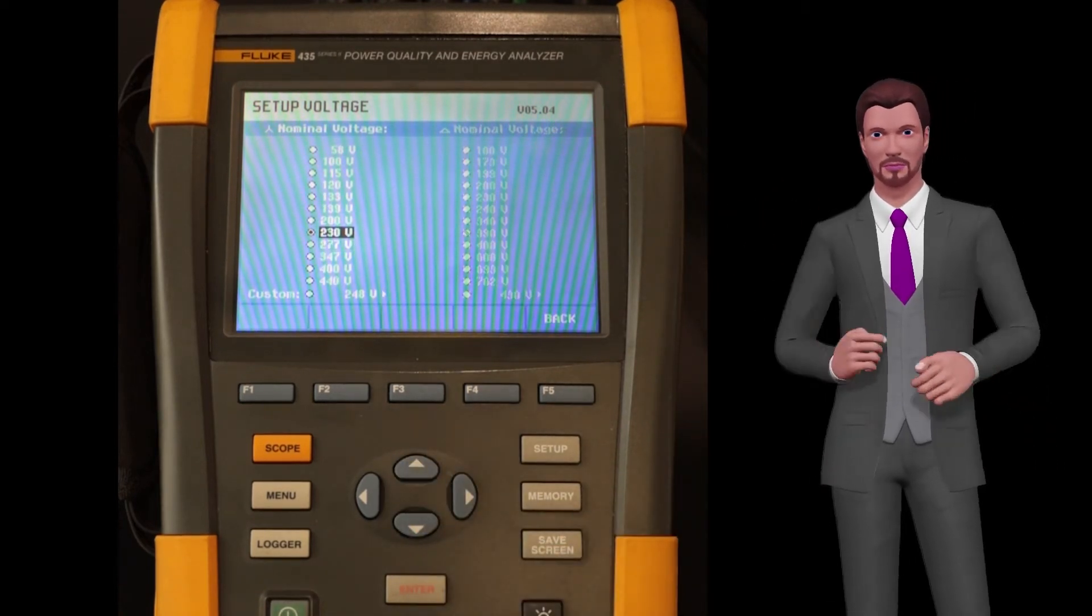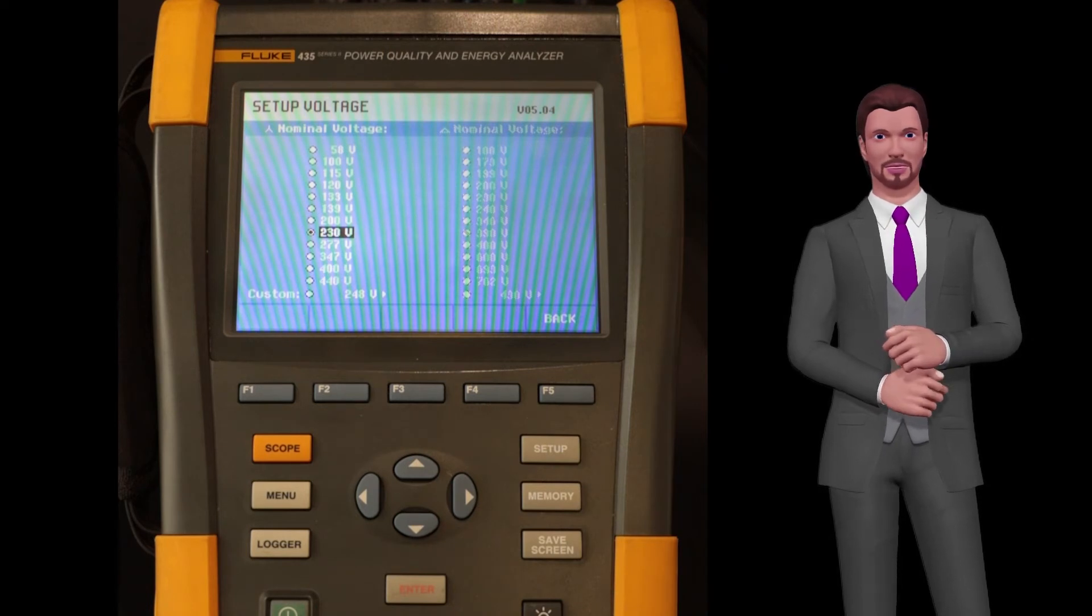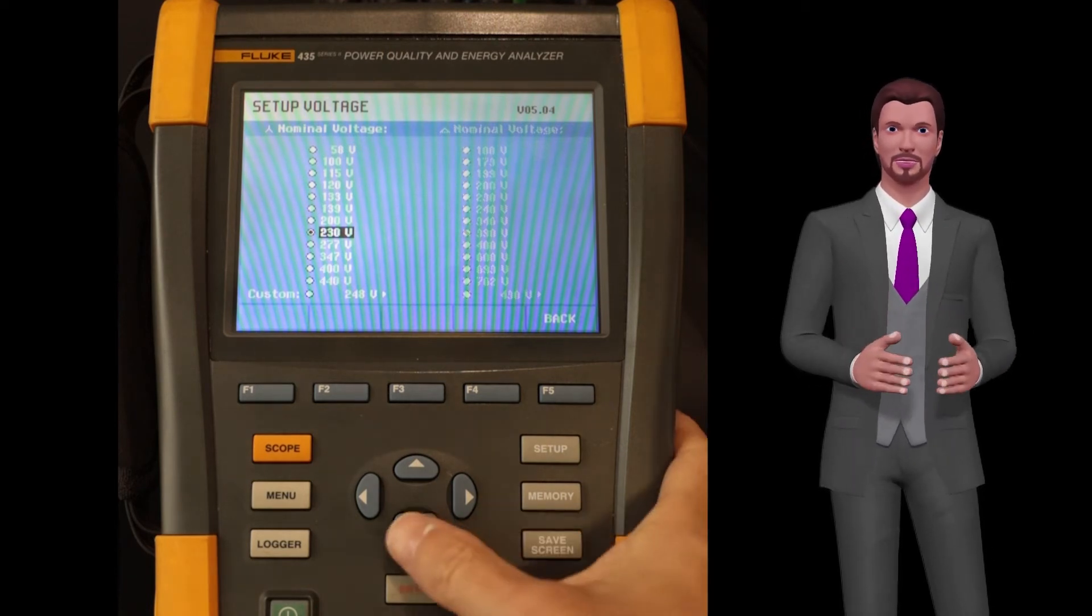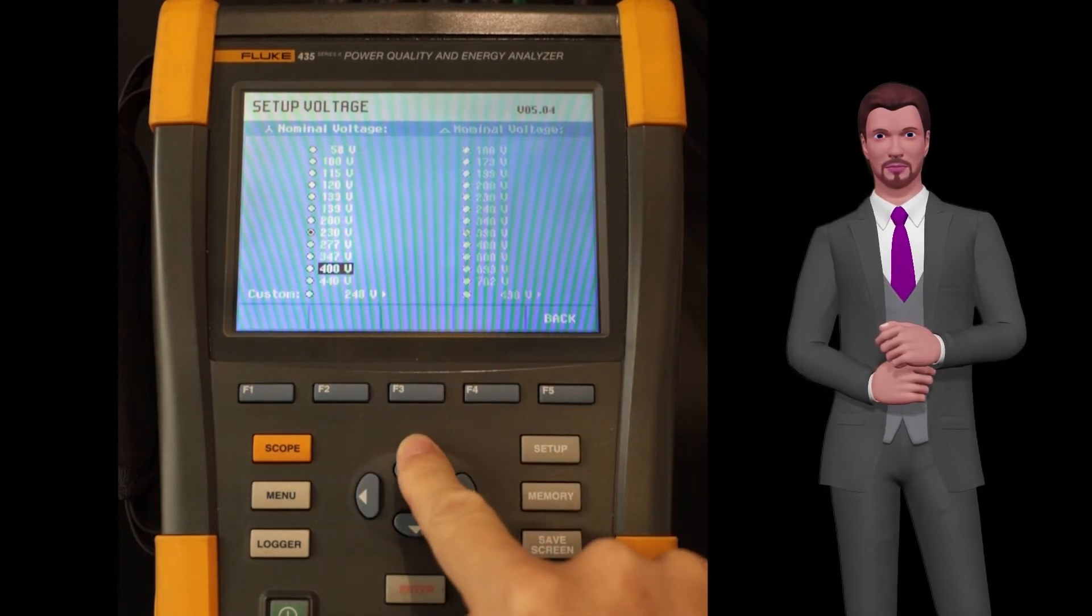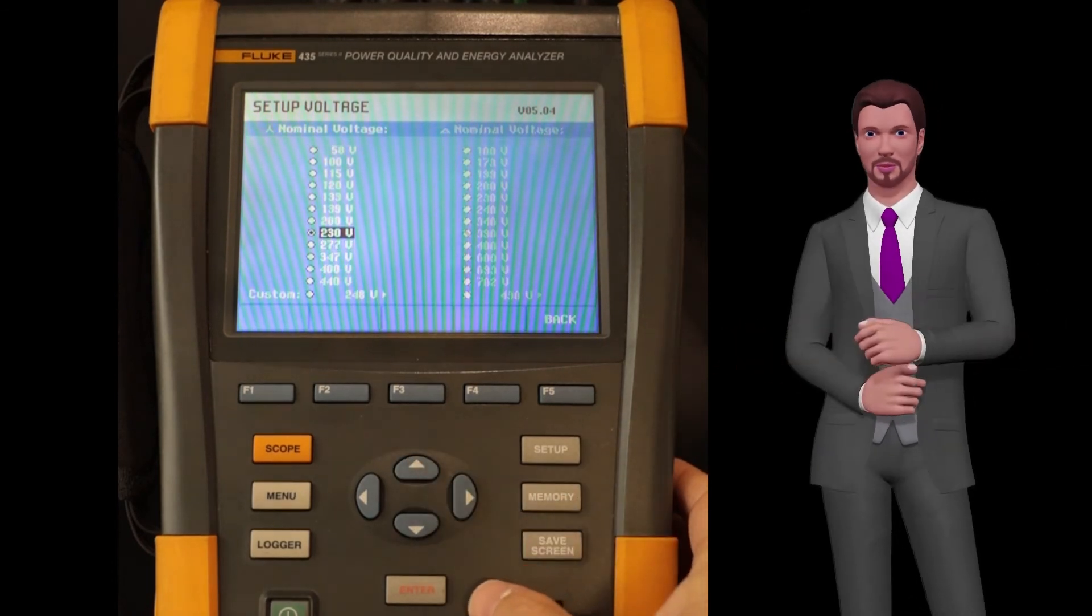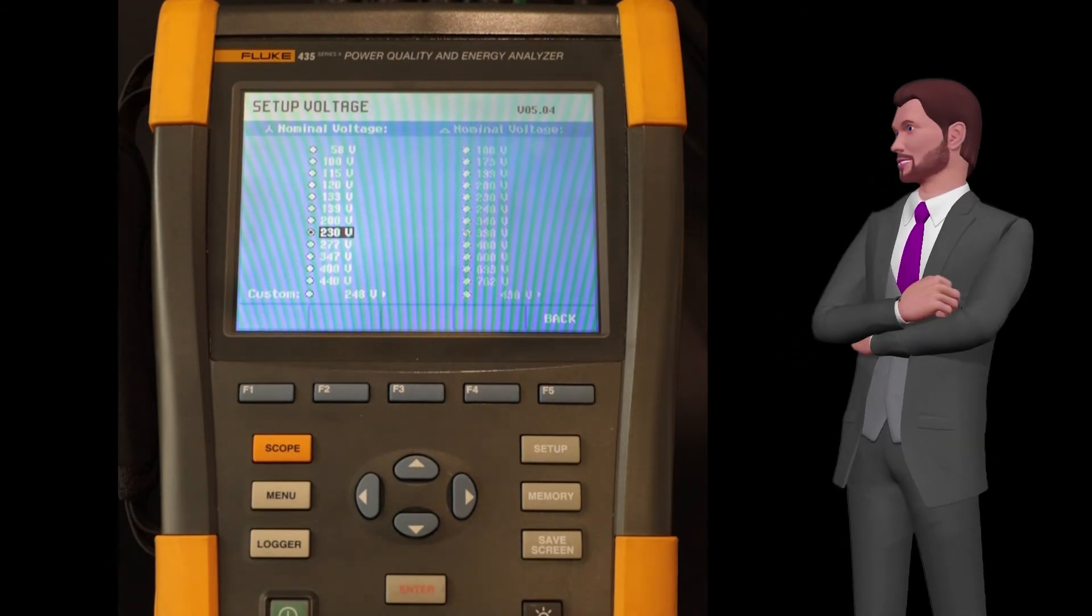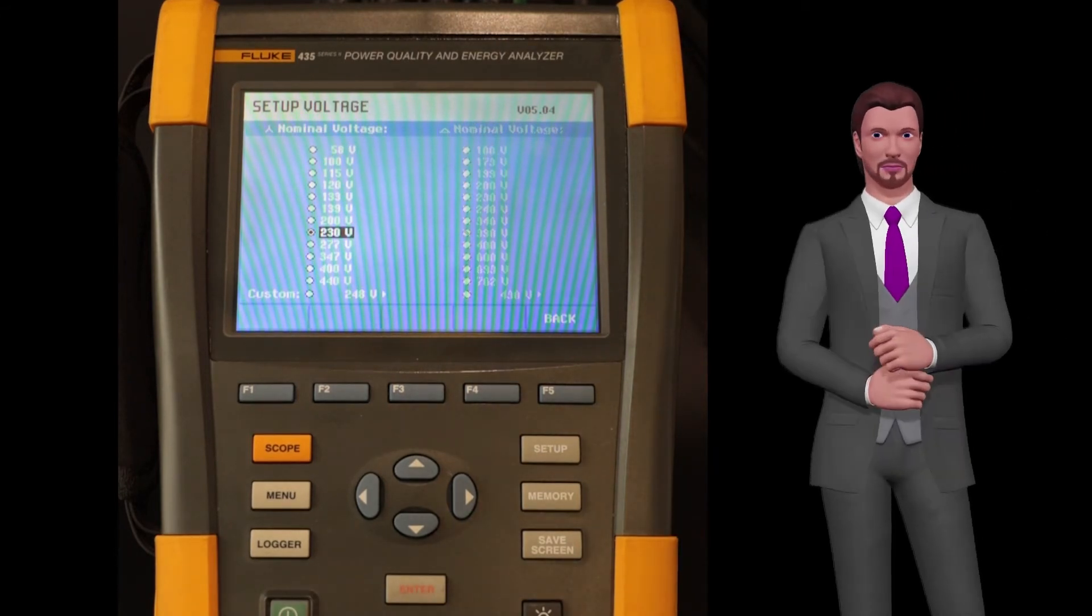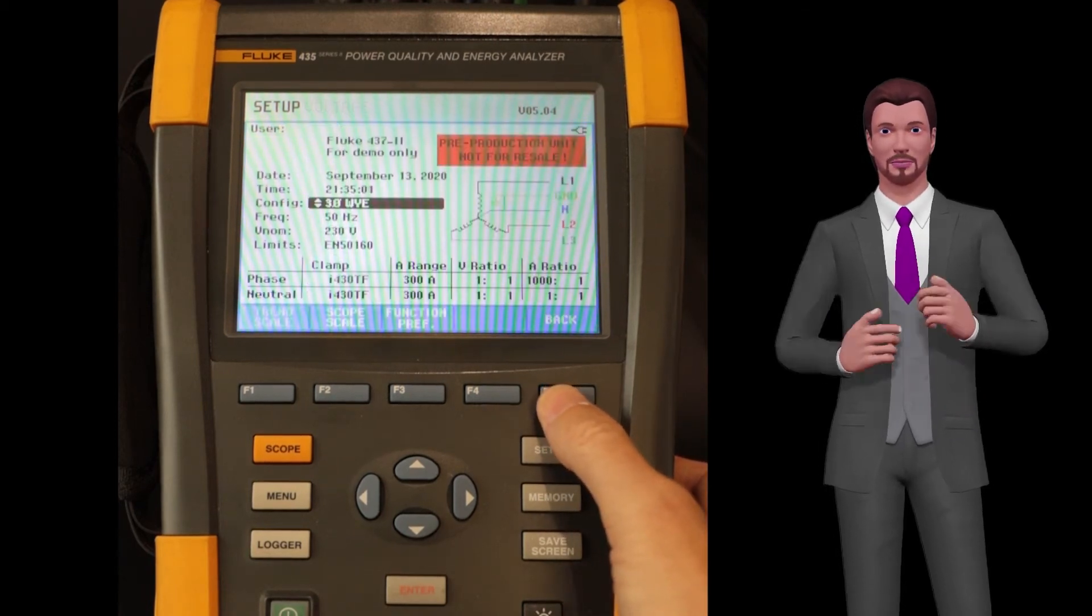This is very important because if we put a value of 400 volts, when measuring a real value of 230 volts between phase and neutral, the unit will think that a voltage drop is permanently occurring. Therefore, in summary, in a delta configuration we need to provide the voltage value between phase and phase, and in a star configuration, we need to provide the voltage value between phase and neutral.